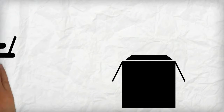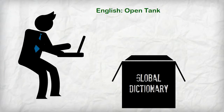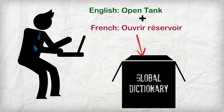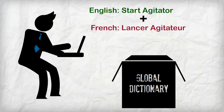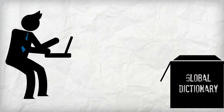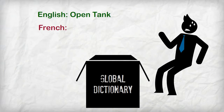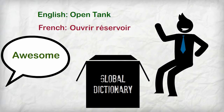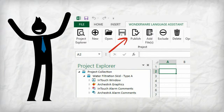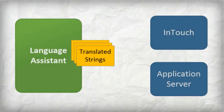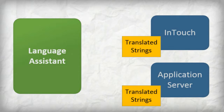To re-use all your translating brain power without having to re-enter all those translations that you've already done, the Language Assistant stores every translated phrase into a global dictionary. When you load in a new content file, the Language Assistant finds those phrases that it already knows and automatically fills them in for you. When you're done, just click Publish, and the Language Assistant will generate your Application Server and InTouch language files, ready to be re-imported.